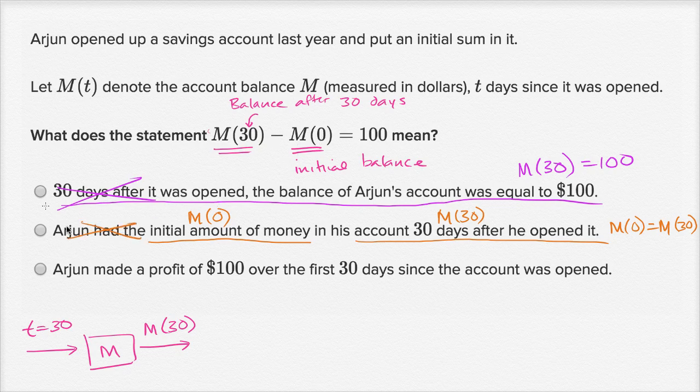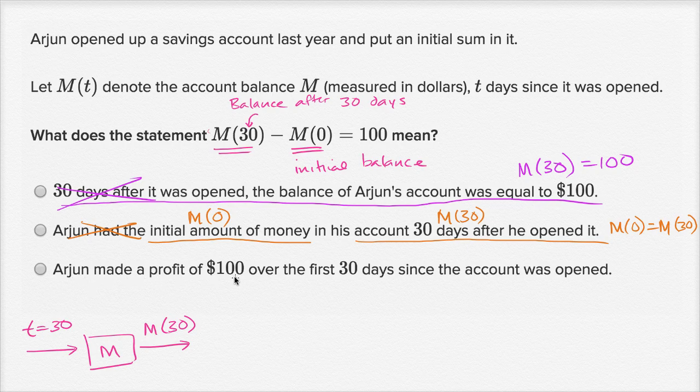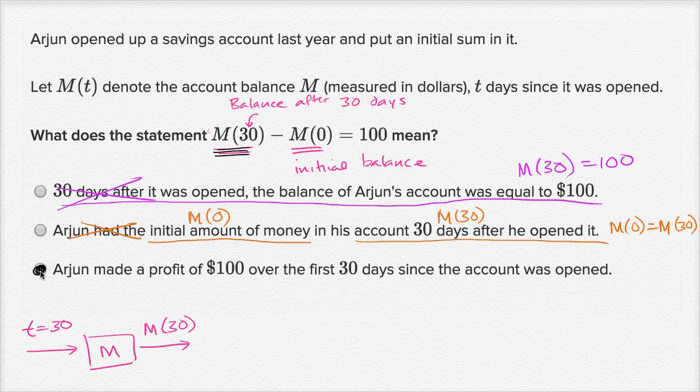And then finally, we have the choice: Arjun made a profit of $100 over the first 30 days since the account was opened. And that seems reasonable, that his balance is $100 higher. The difference between if you take his initial balance and subtract it from his balance after 30 days, it's 100. So it makes sense that maybe he got that profit from interest or something else that he got in his bank account over the first 30 days.